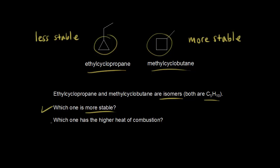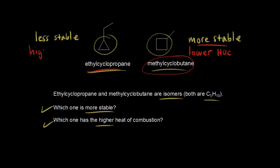The second question is: which one has the higher heat of combustion? We know that the more stable compound has a lower heat of combustion. That means methyl cyclobutane has the lower heat of combustion because it's more stable, which means ethyl cyclopropane must have the higher heat of combustion. The higher heat of combustion corresponds to the less stable compound.